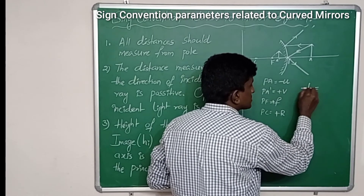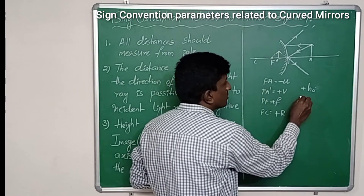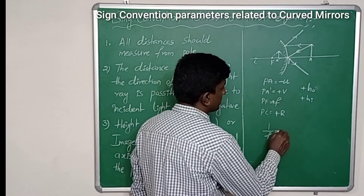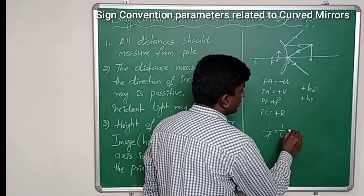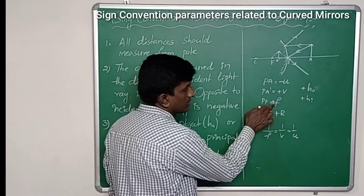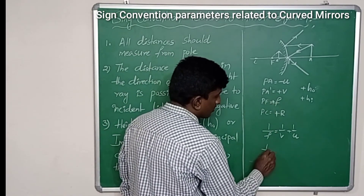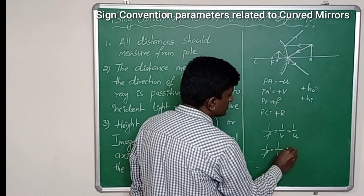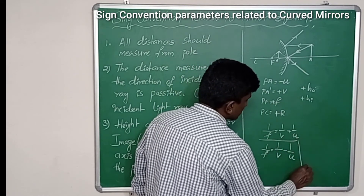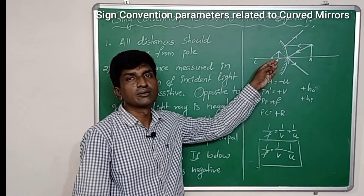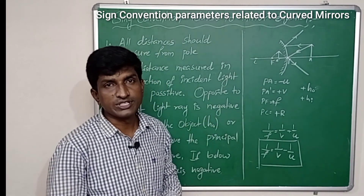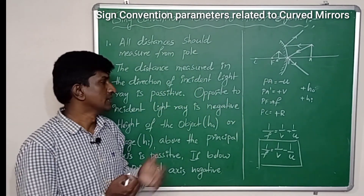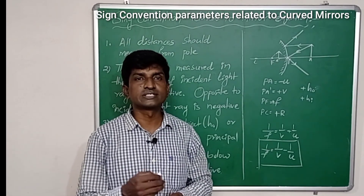The height of the object is above the principal axis, so it is positive. The height of the image is also above the principal axis, so it is also positive. Substituting in the mirror equation 1/f = 1/v + 1/u: focal length is positive so 1/f, distance of image is positive so +1/v, and distance of object is negative so −1/u. These are the sign conventions for the convex mirror. The same sign conventions are also used in curved lenses, which we will discuss in the next chapter. Thank you.